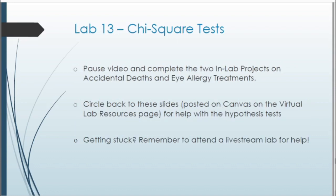That does it for the review by example. We can now get started with the ILP — there are actually two of them, on accidental deaths and eye allergy treatments. Pause the video and complete the two in-lab projects. You can always circle back to these slides posted on the virtual lab resources page for help on how to set up each hypothesis test. If you get stuck, remember you can always meet with your lab instructor or attend one of the livestream labs on Tuesdays and Wednesdays.